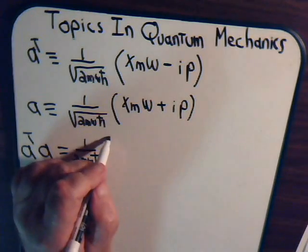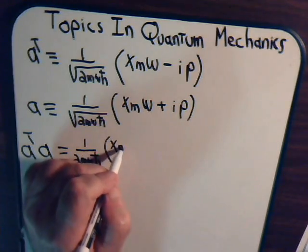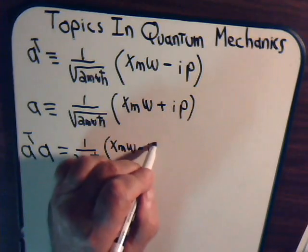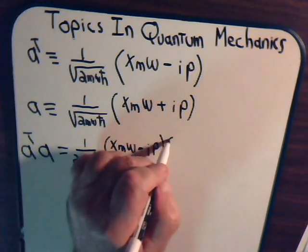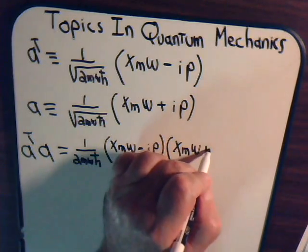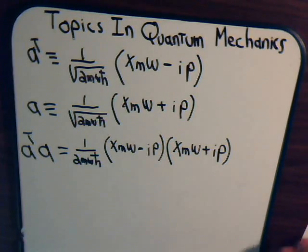And then, let's just say times xm omega minus i p. And then, xm omega plus i p.